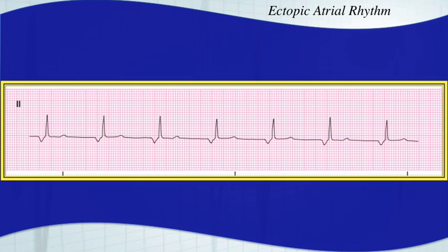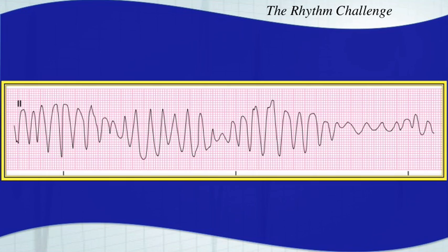The answer for this one is polymorphic VTAC. If you said torsades de pointes, I wouldn't count you off any points for that either. It does look like it has a bow tie effect. In fact, this looks a lot like early V-fib might look. A lot of people confuse early ventricular fibrillation for torsades.